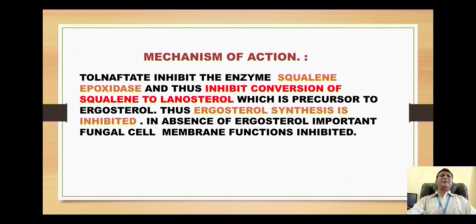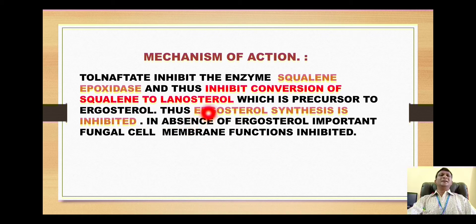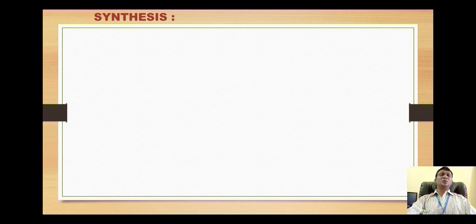The mechanism of action is very simple. Tolnaftate inhibits the enzyme squalene epoxidase, which is important for conversion of squalene to lanosterol. Lanosterol is a precursor to ergosterol. Just as cholesterol plays a very important role in our body, ergosterol plays a very important role in fungal cells. When ergosterol synthesis is inhibited, important fungal cell membrane functions are inhibited, giving antifungal activity. Tolnaftate is used in treatment of itching conditions and ringworm.